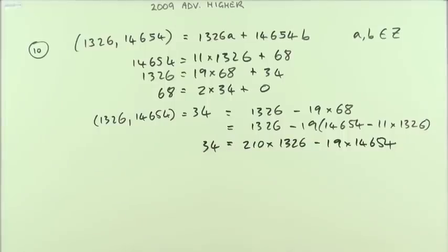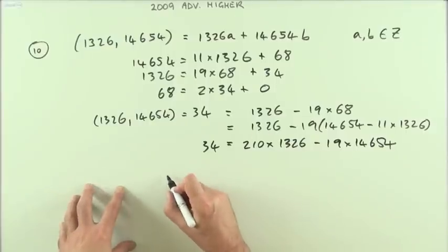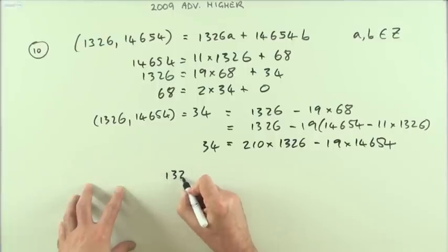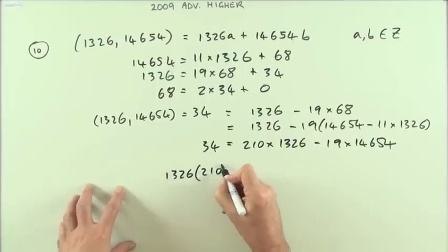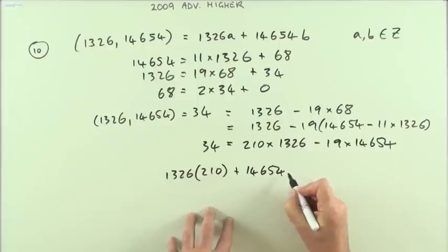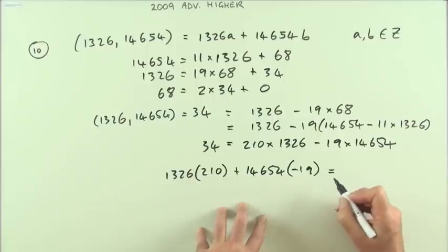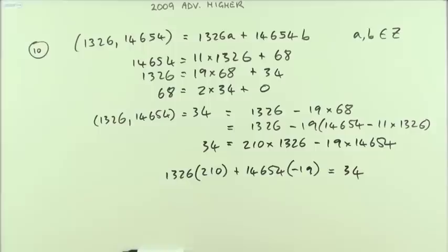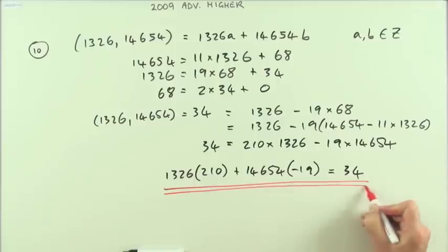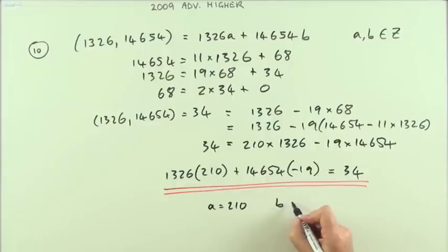And that would be the required result. Not quite in that form, it says express it in that form, so maybe I'll just put it that way around then. So my result would be this thing: I've got 1326 times 210 plus 14654 times, and that'll have to be negative 19 to make the greatest common divisor 34. So that'd be the particular solution to that Diophantine equation in this case. It would be a equals 210 and b equals negative 19.